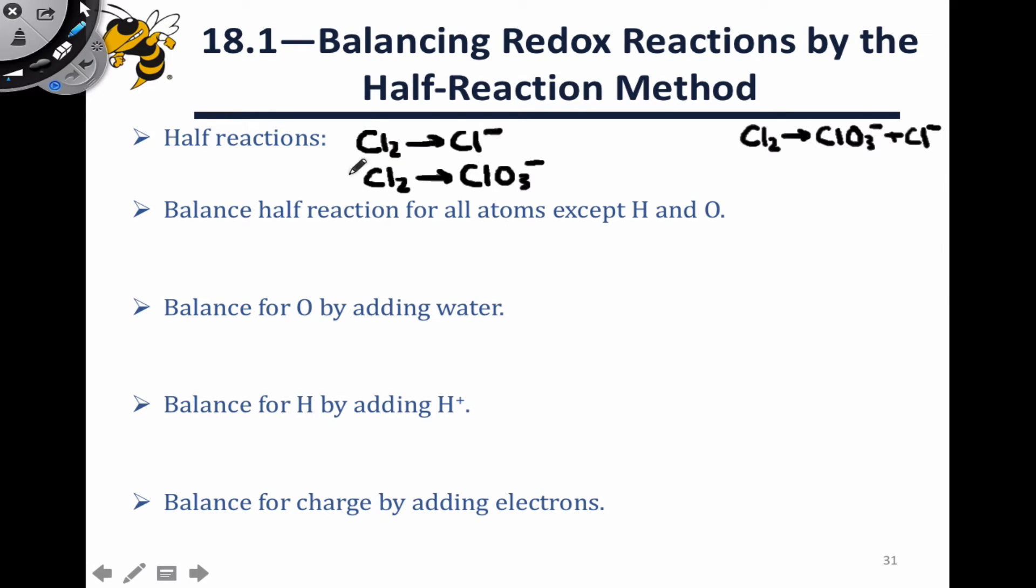We then balance each of the half reactions separately for all atoms except hydrogen and oxygen. So in the first case, it's pretty straightforward. We have two chlorines on the reactant side, so we need two chlorines on the product side in the form of 2 Cl-.